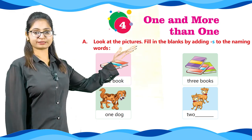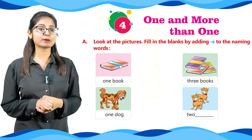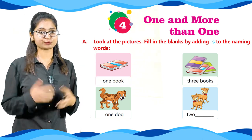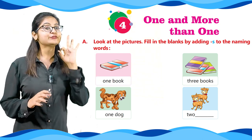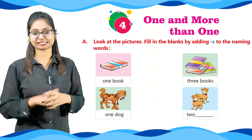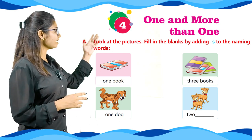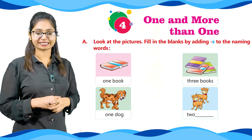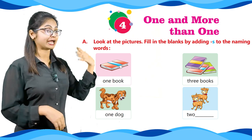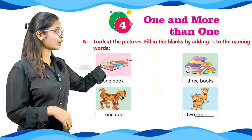We have to fill the gaps. In question number one, we have given one book, and in the second picture we have given three books, so what would we write? Three books. Question number two: we are given one dog in picture one, and moving towards the next picture we can see there are two, so we will write two dogs.